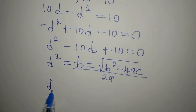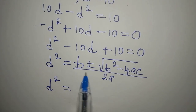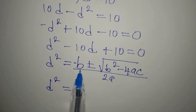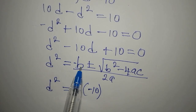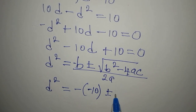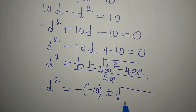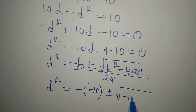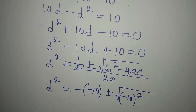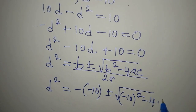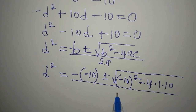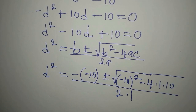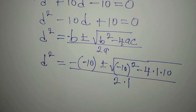Substituting in: d equals negative of negative 10, plus or minus the square root of negative 10 squared minus 4 times 1 times 10, all divided by 2 times 1.